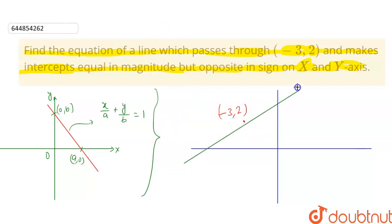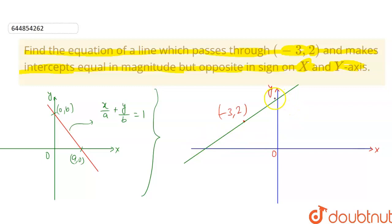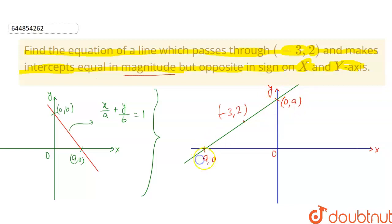The required line passes through this point and makes equal intercepts but opposite in sign with the coordinate axes. Equal intercept means if this point on the y-axis is '0 comma a', then the point on the x-axis will be 'a comma 0'. This distance and this distance will be equal. If the y-intercept is plus a, then the x-intercept will be minus a.